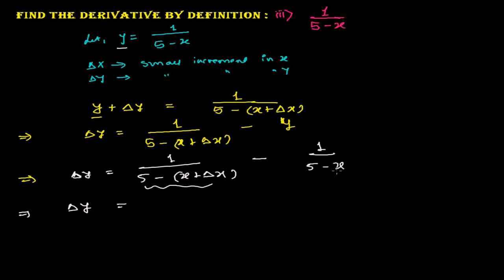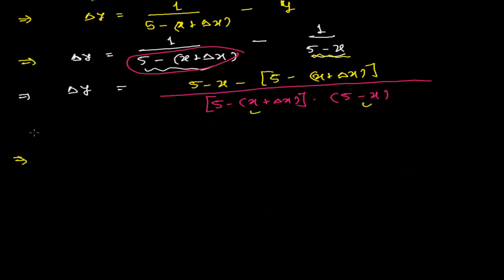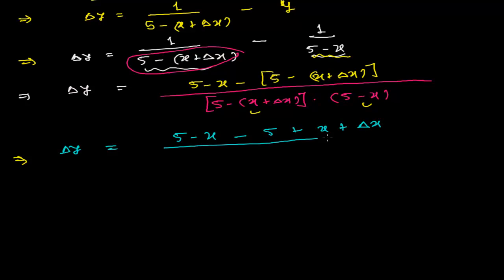The LCM is (5 minus x plus delta x) times (5 minus x). When the whole denominator divides the first term, I'm left with (5 minus x), and when it divides the second term, I'm left with minus (5 minus x plus delta x) inside the bracket.